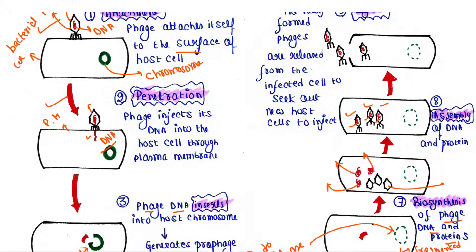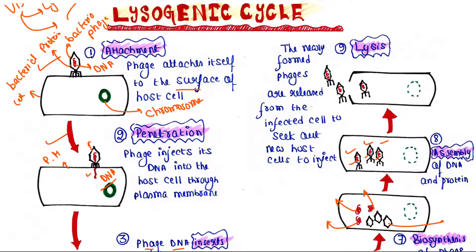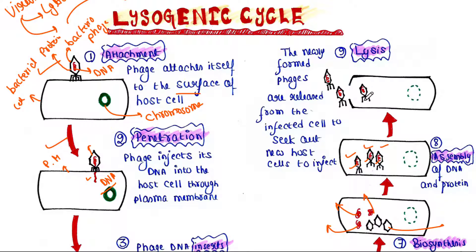The last step is lysis. Here the bacteria will be ruptured, and those virus particles — phage particles — will now come out of the bacterial cell and they will seek out new host cells to inject.